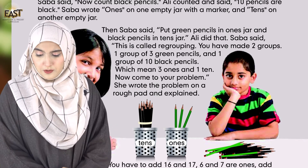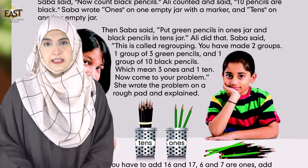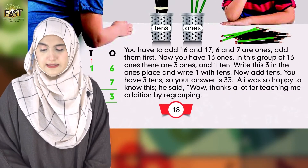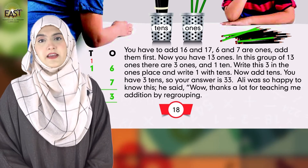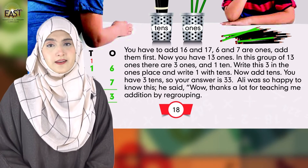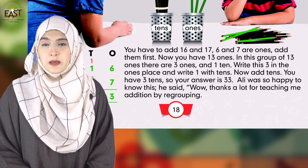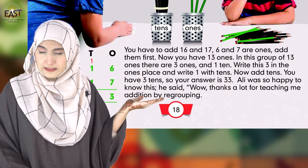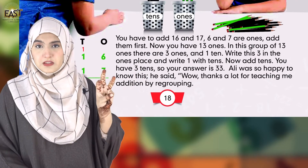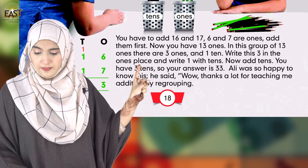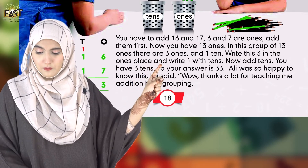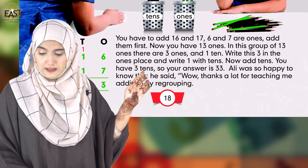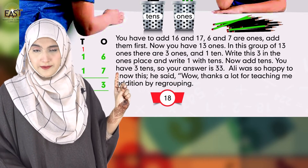She wrote the problem on a rough pad and explained: 'You have to add 16 and 17. 6 and 7 are ones because they are less than 10 — 10 سے جو less values ہوتی ہیں وہ ones میں شامل ہوتی ہیں۔ Add them first — 6 + 7 = 13. Now write 3 in the one's place and carry 1 to the tens column.'